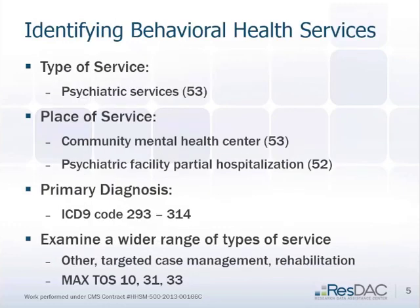This describes in more detail how we do the behavioral health services. It's either a type of service for psychiatric, or it happens in a community mental health center or another psychiatric facility — those are place of service codes — or the primary diagnosis is mental health. We also look at other types of service, since a lot of mental health is identified as other providers. Targeted case management and rehabilitation are also used, and some states use more of those than others, particularly targeted case management for people with psychiatric disabilities.